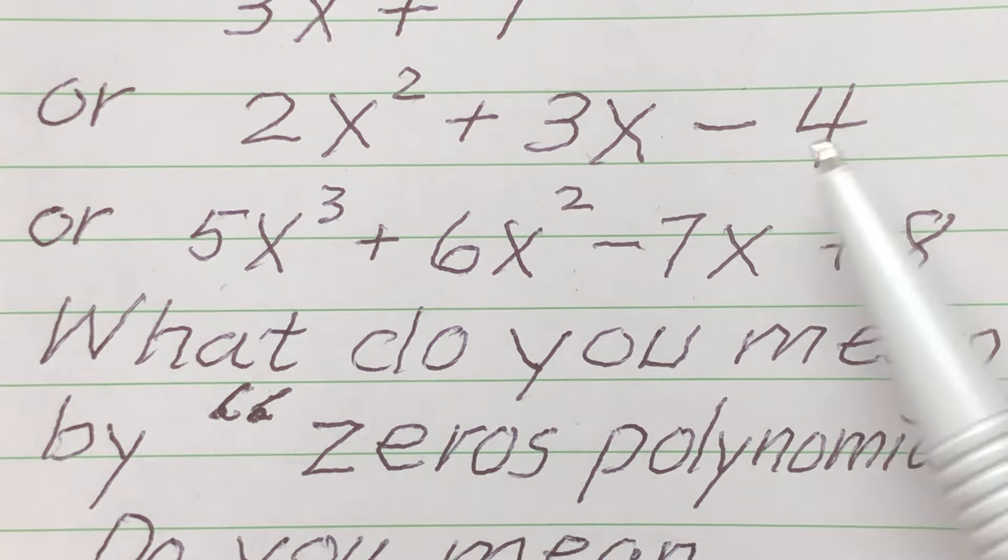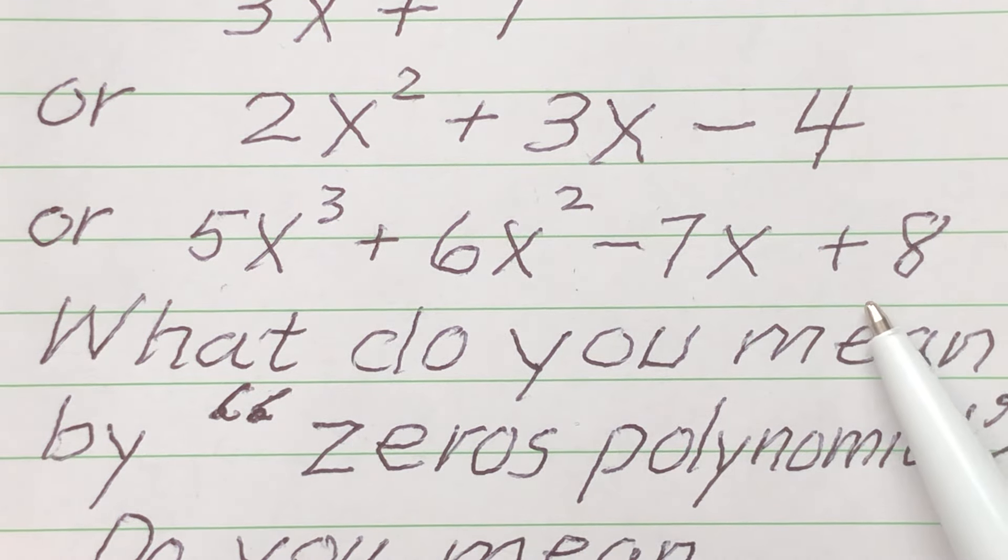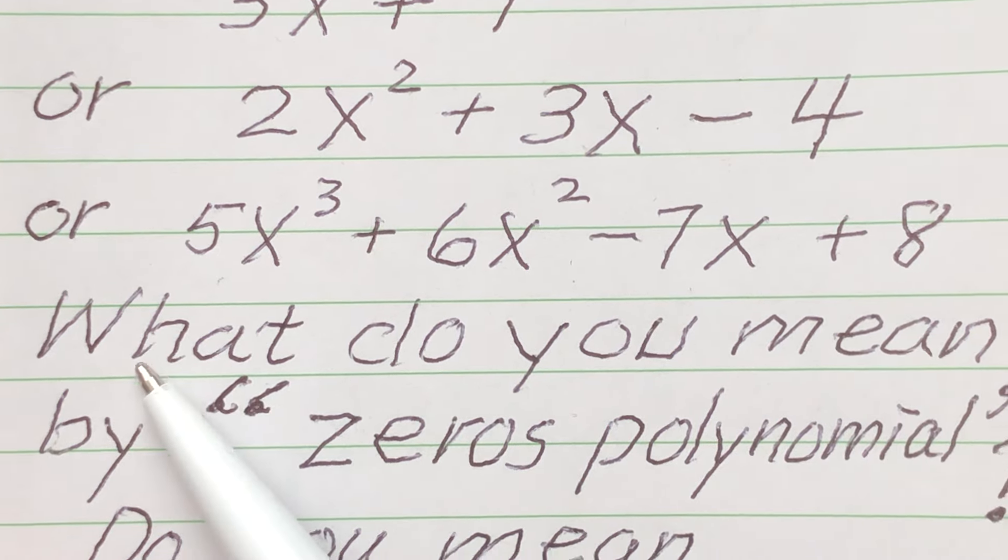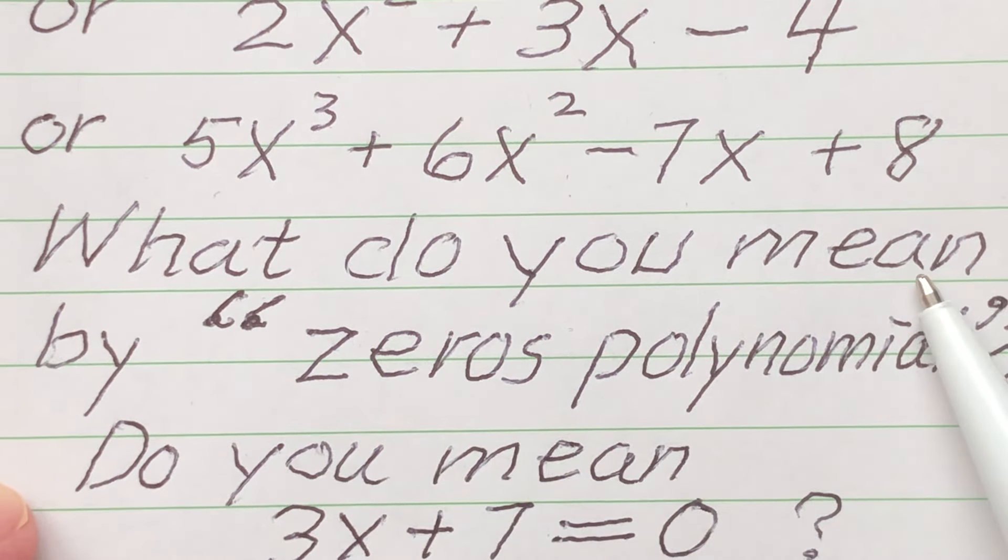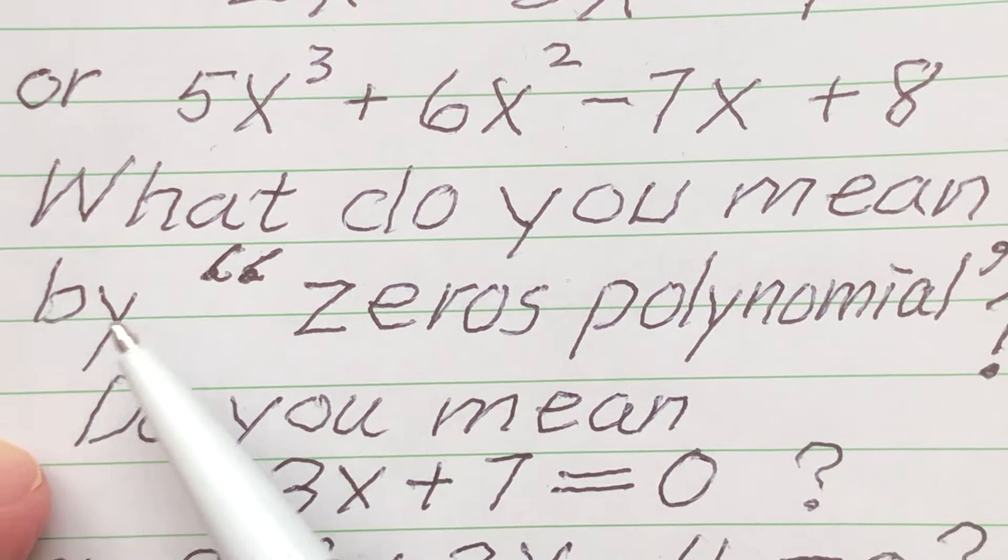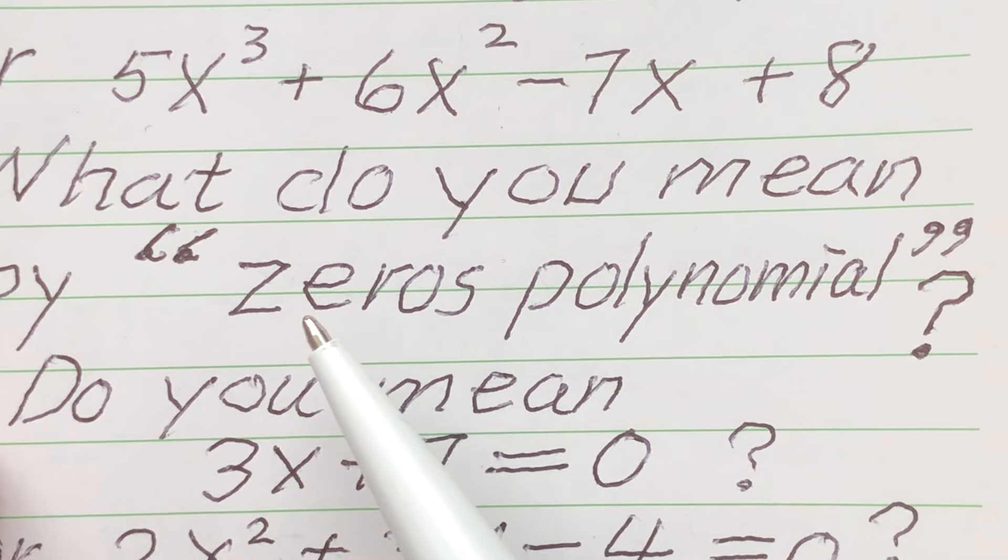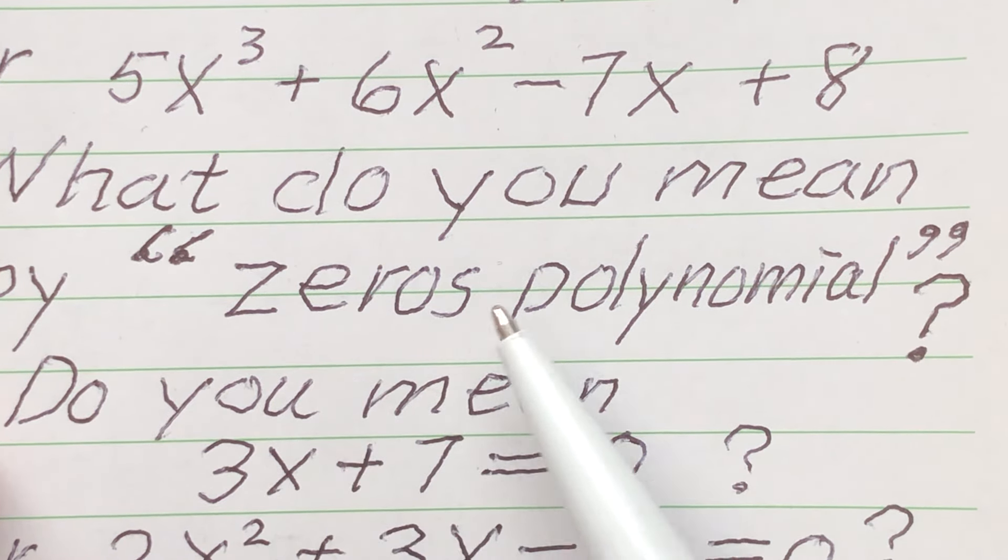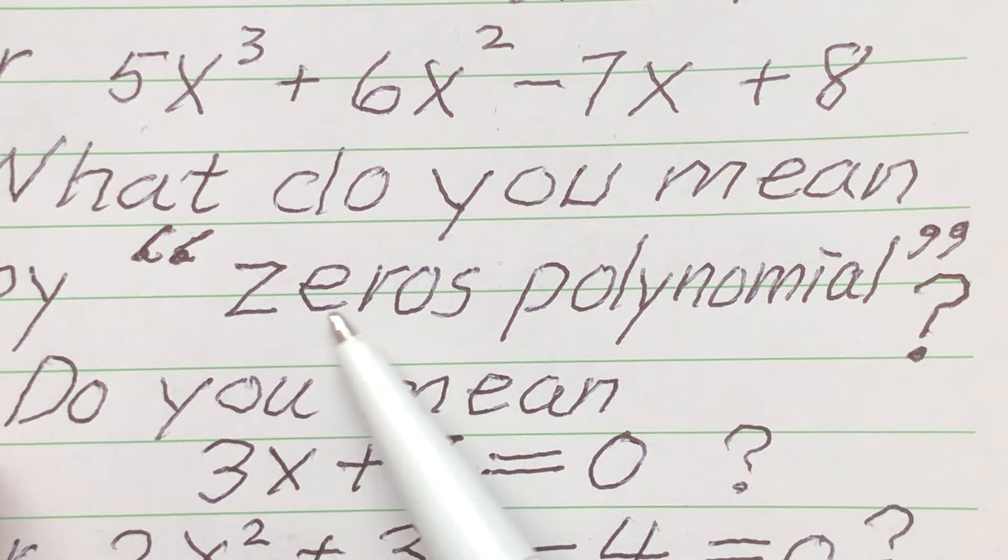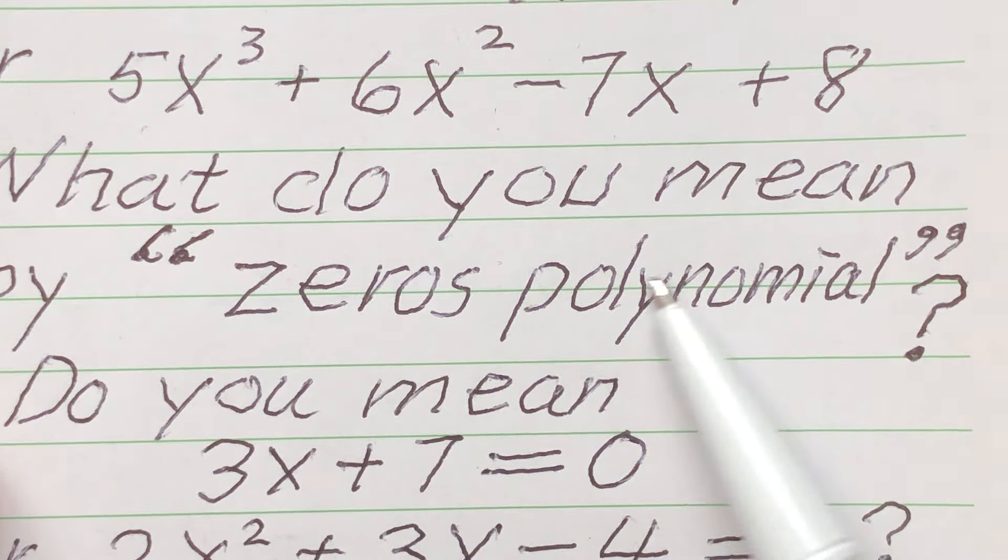Now, these are examples of polynomials. What do you mean by, this is what you said, zeros polynomial? What do you mean by this?